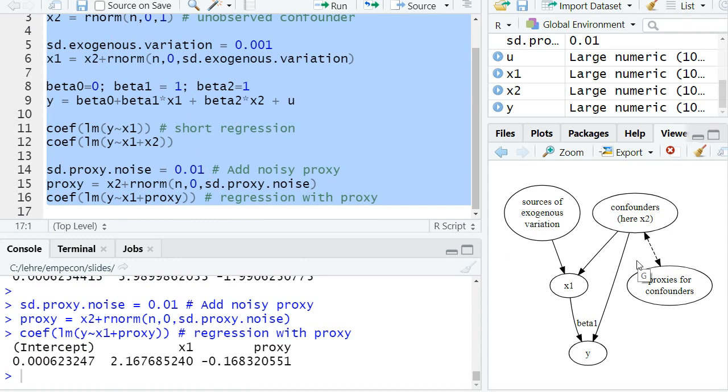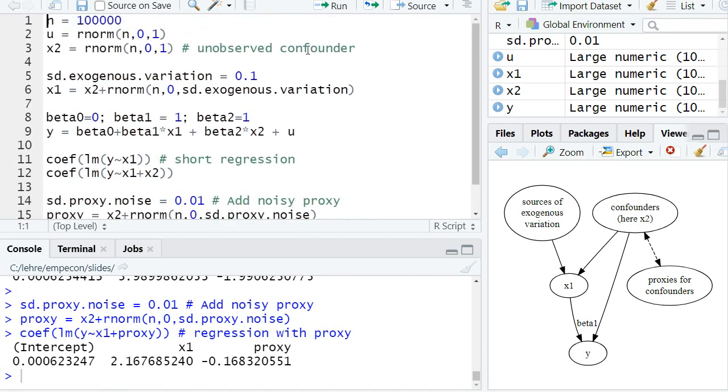So this means even if we have a very good proxy for the confounder, we still need sufficient sources of exogenous variation in x1 to precisely estimate our cause and effect of interest without bias.